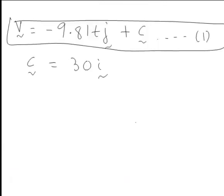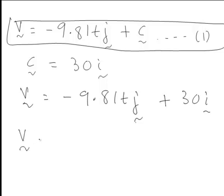We can now substitute c into our initial equation 1 for the velocity, which tells us for this example the velocity is negative 9.81tj plus 30i. For tidiness we'd usually rewrite this with i first then j. So that is the velocity of the projectile.